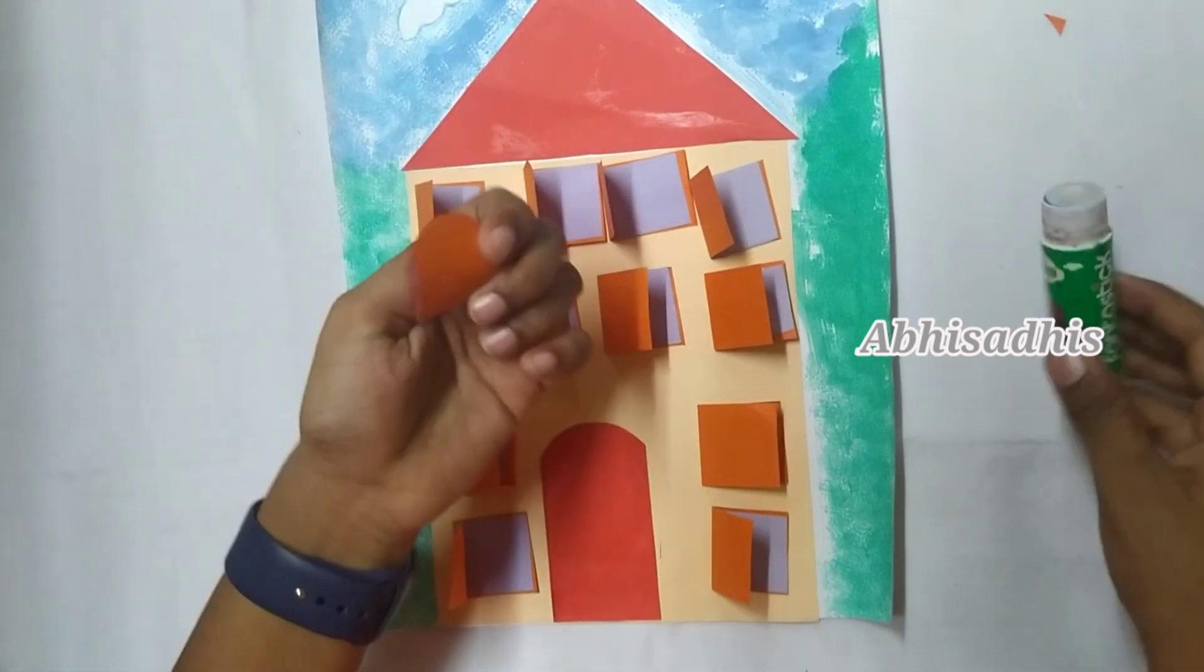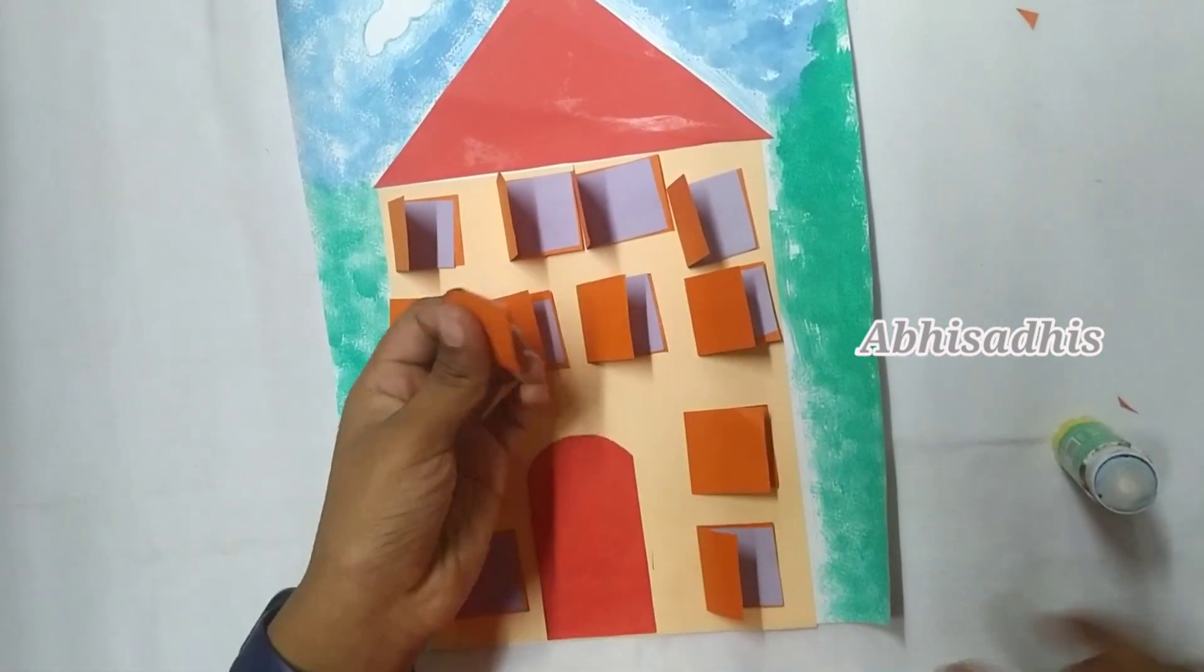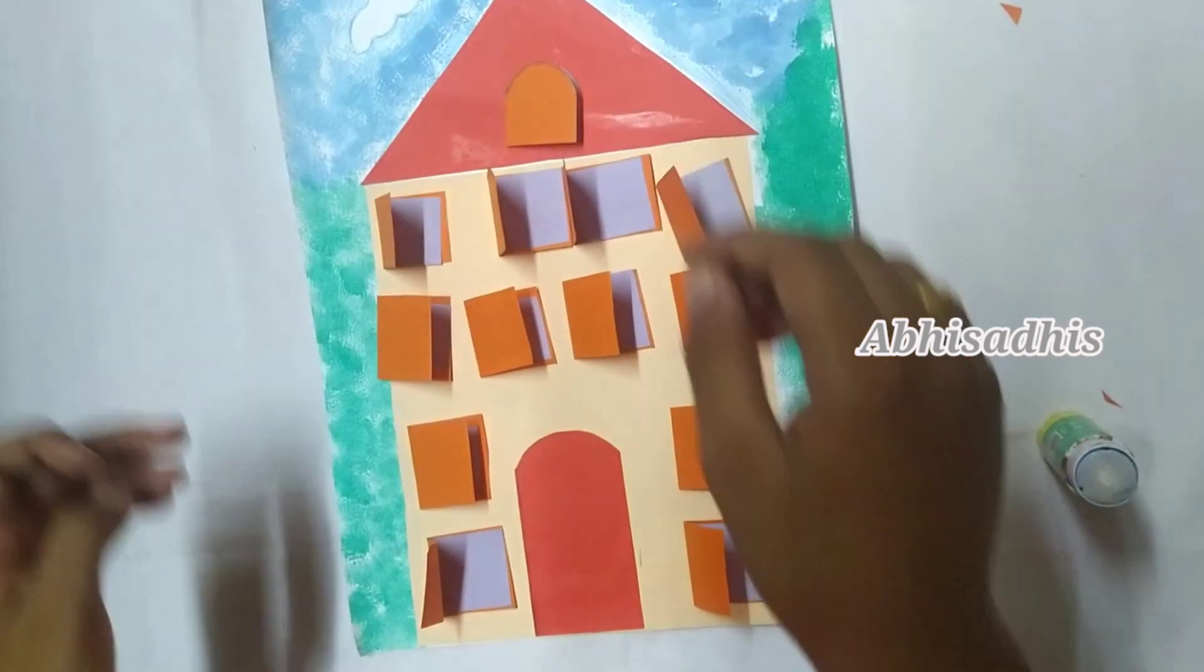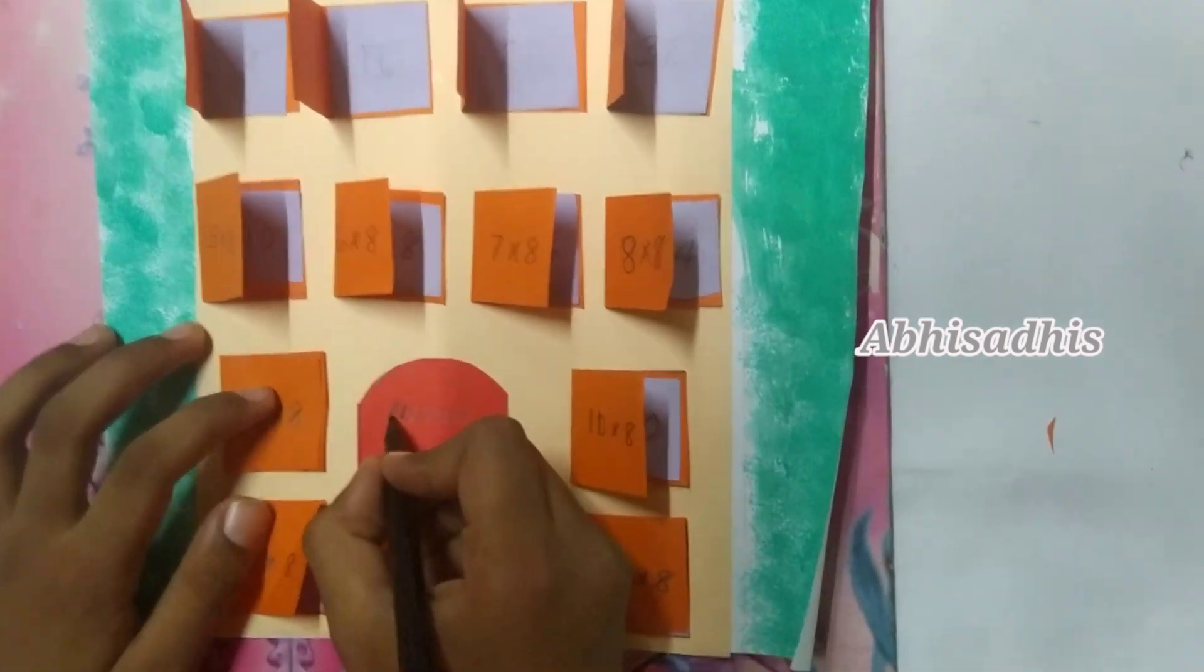Then stick the strips on the house as shown. Now write house of 8 on the door using a marker.